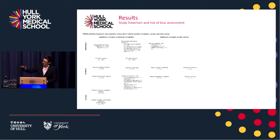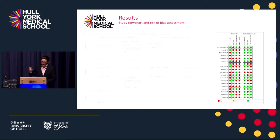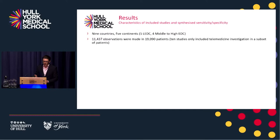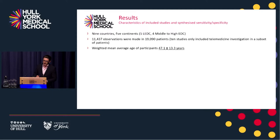After de-duplication, we had 1,400 records that we distilled down to 17 included in a meta-analysis. And those 17 studies had a high risk of bias in at least one domain in every single study — some more than others, but there was no study at a low risk of bias across the board. Studies took place in nine countries, five continents, and a mix of lower and higher to middle economically developed countries. There were 11,500 observations made in 20,000 patients — the disparity because a lot of this was done as a subset analysis of larger studies. The average age of participants was 47 plus or minus 13, and the majority of participants were female.